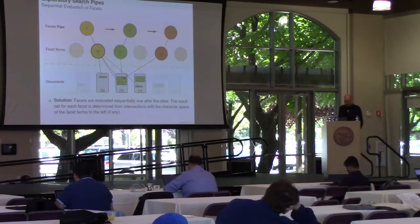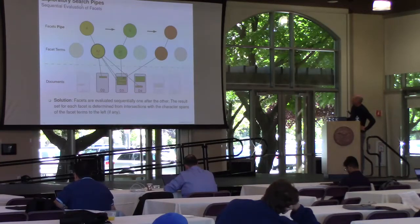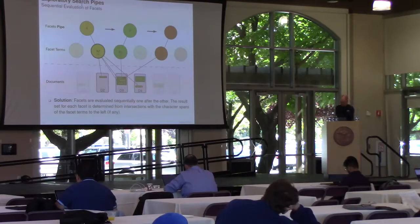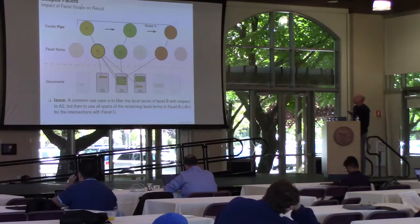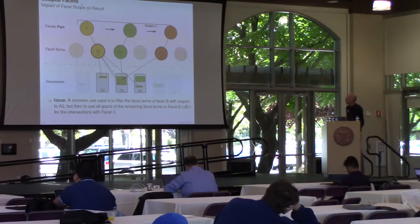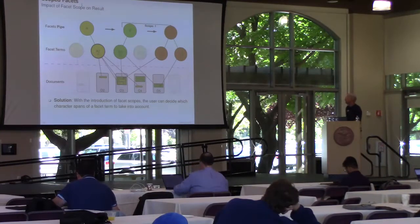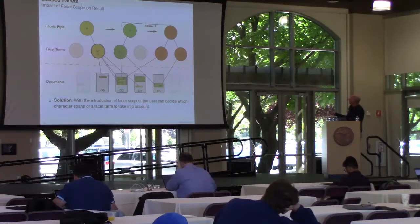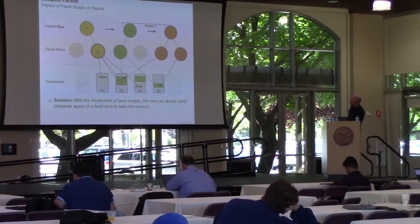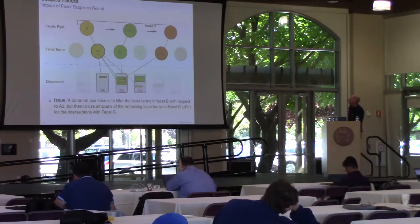Now, a final detail is the question, which spans of b1 do we take into account for the intersection with c1? There are two possibilities which both make sense. The first one is to say we only take those spans which have an intersection with a2. The second one would be to say we also take into account all the spans of b1, but there is at least one intersection with a2. To give the user the possibility to choose, we introduce the concept of facet scopes. If the scope is 1, we only take into account all spans of b1. If the scope is 2, we only take into account spans which also have an intersection with a2.